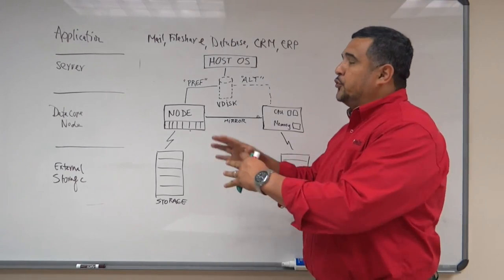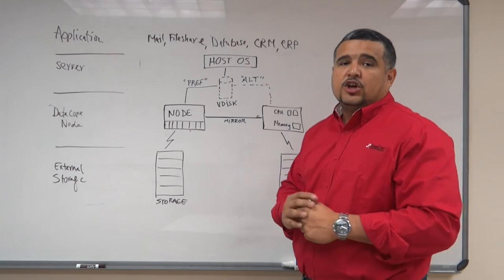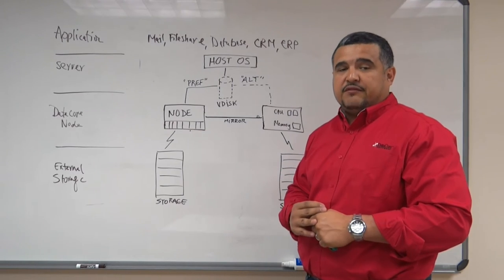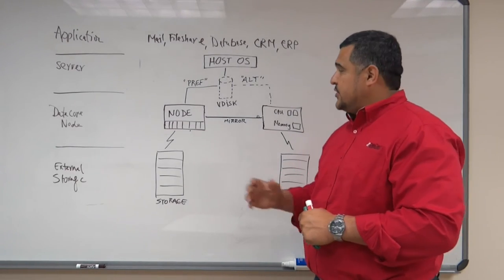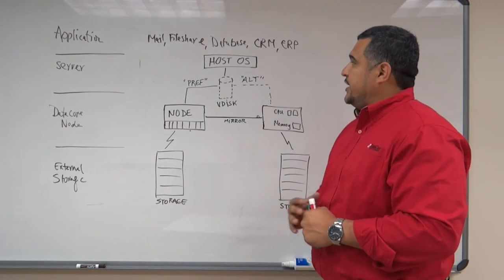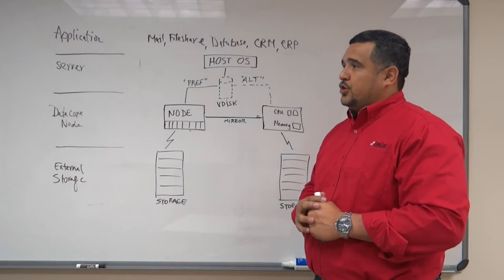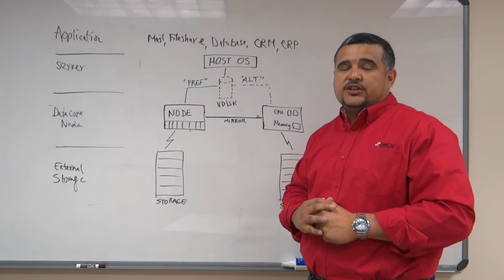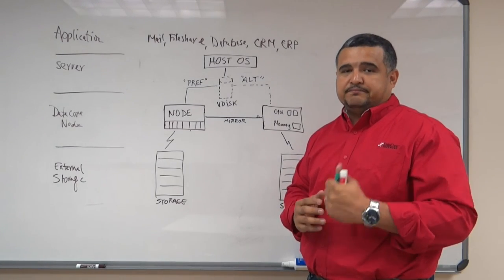So essentially, you're fully protected with a DataCore two-node HA environment. This is what an HA infrastructure would look like. Thank you for watching — till next time.